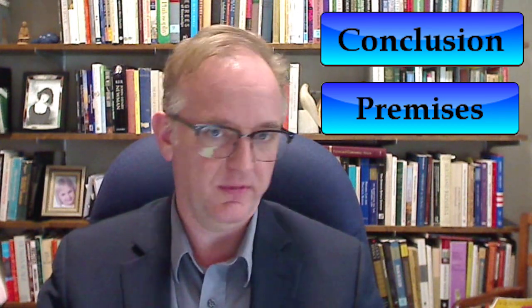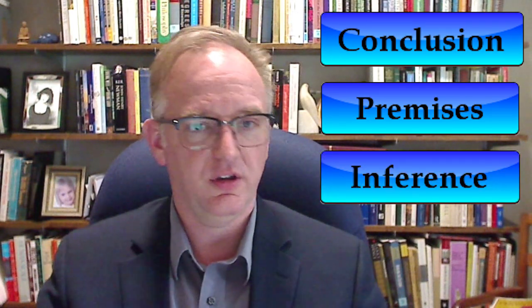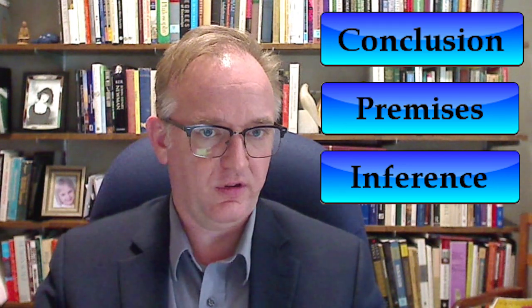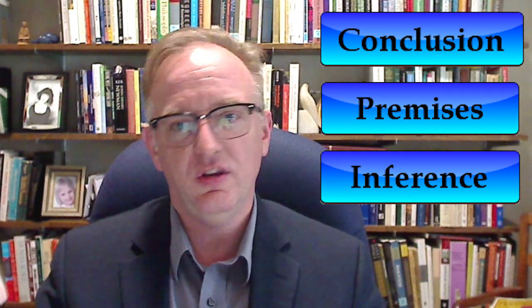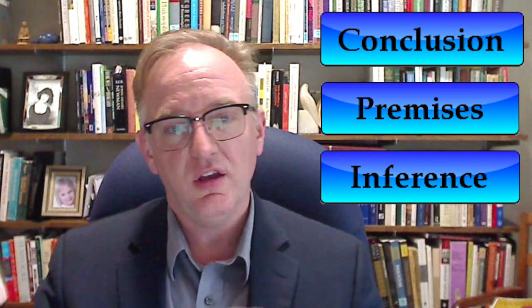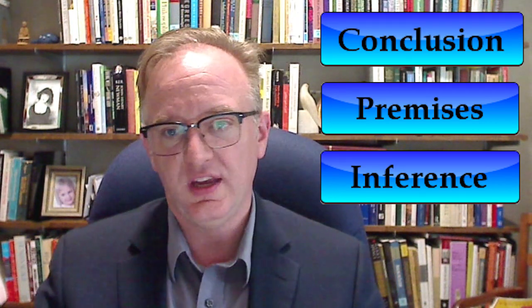Hi. Today I'd like to talk about parts of an argument and how to recognize them. Arguments have three parts. The first two are types of claims: the conclusion, which is the claim being argued for — what you're trying to prove or show to be true — and the premises, which are the claims being argued from, the evidence or support given in favor of the conclusion. The third part is more abstract: the inferential link between the premises and the conclusion. The inferential link is harder to recognize because it usually is not explicitly stated in a separate sentence. Often it is an unspoken connection between the claims being stated.